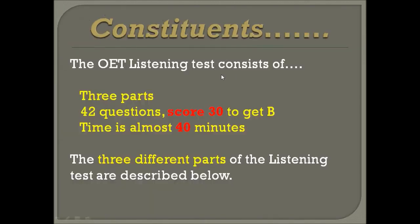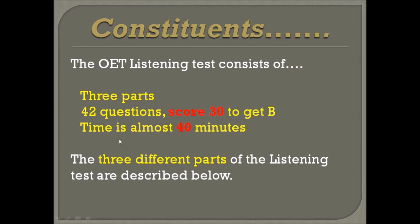Let me tell you about the structure of the OET listening subtest. OET listening comprises of three parts: listening part A, listening part B, and listening part C. Out of these three parts you will have 42 questions in total, and to get a B grade on the OET listening exam you have to score only 30 marks out of 42.